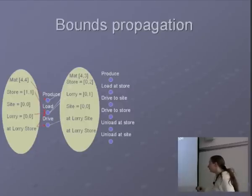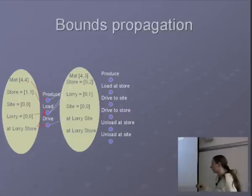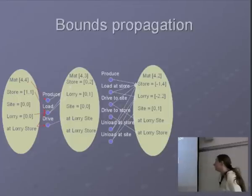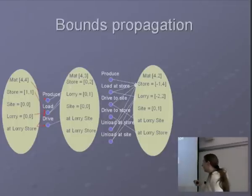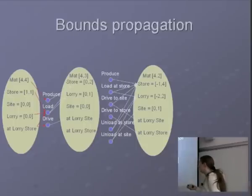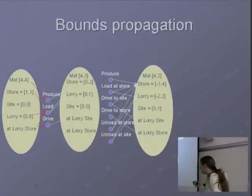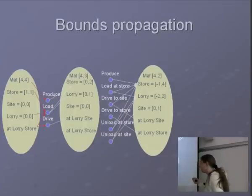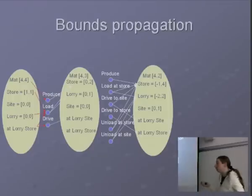Then we carry on propagating. These are the next actions applicable at this layer — there are some more. We can now unload at the store, or unload at the site. We still have the propositional effects from the drive action. So we get a new set of bounds: we've done nothing so we have four material, or we can produce twice so we have two material. The lorry has bounds minus two to two — because it was zero to one, and we unloaded at the store or the site, so we can take two off the lower bound giving minus two. The upper bound is two because if we loaded there and loaded again, we get two. That's how we do the bounds propagation.